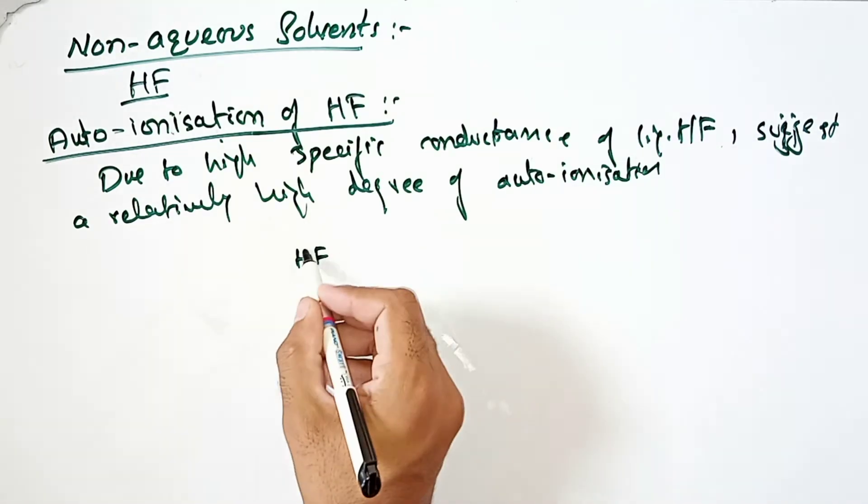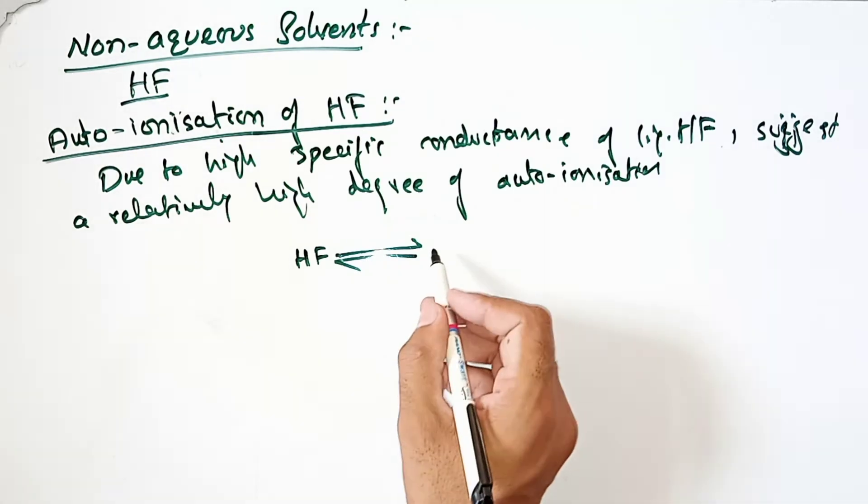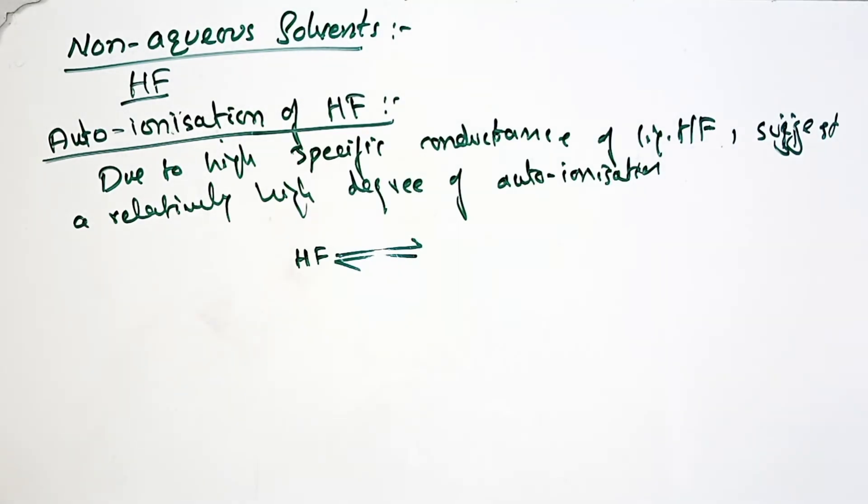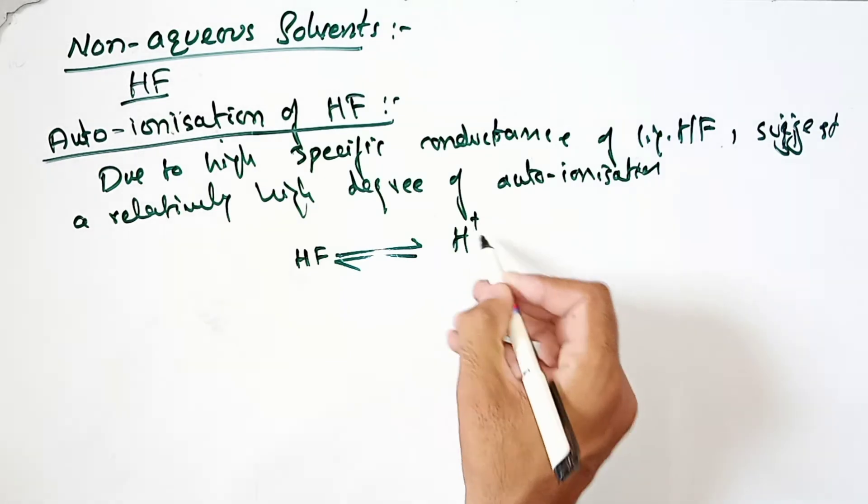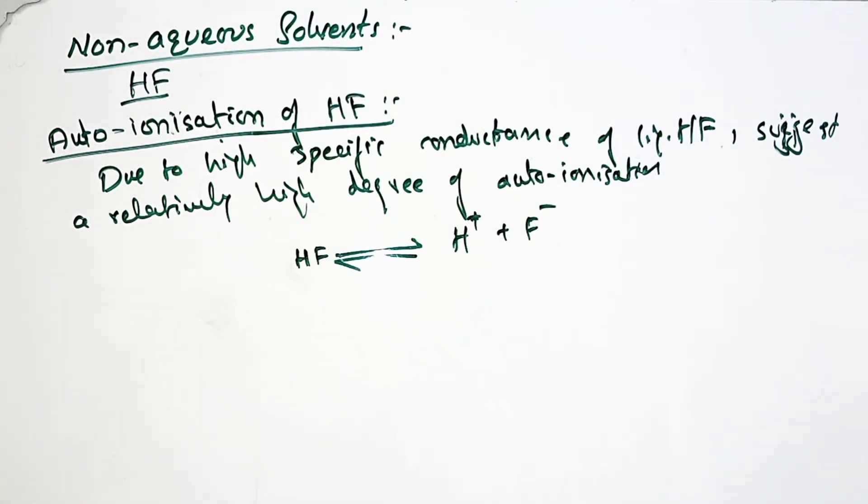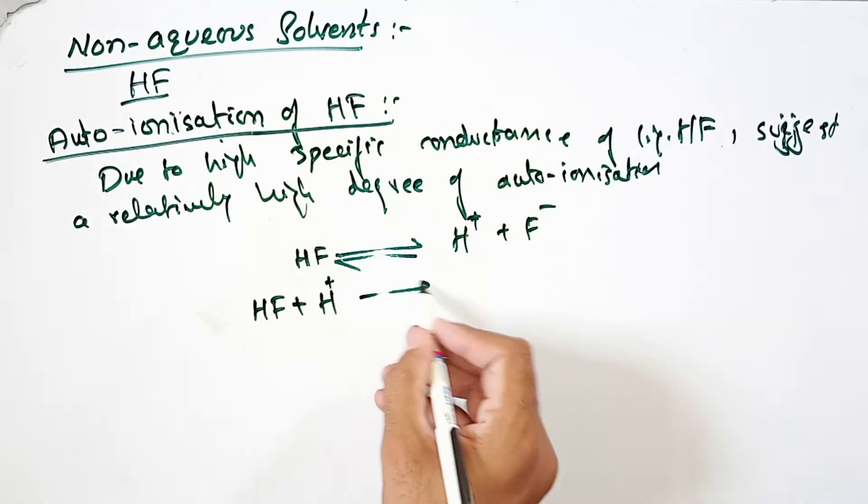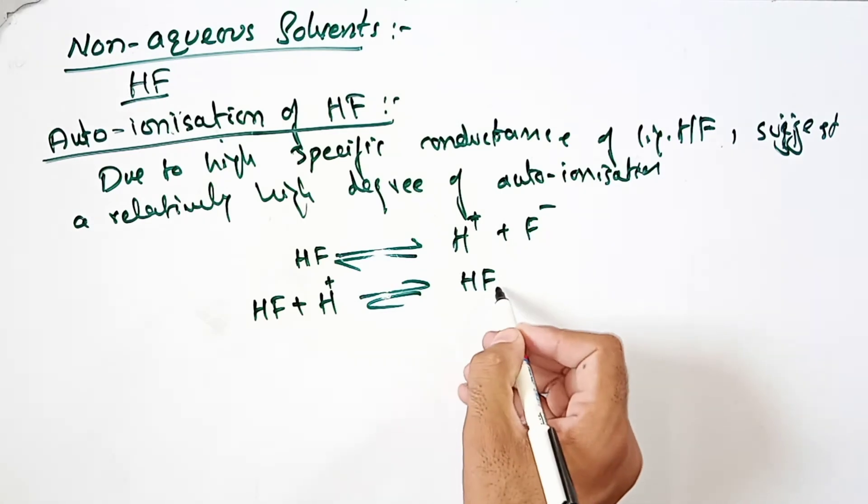And F- ions and HF can also absorb, HF can also have the capability to gain the proton. HF is H1, so it will get H2F+.